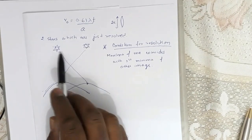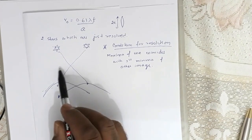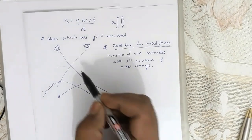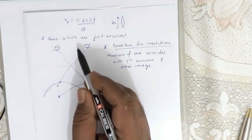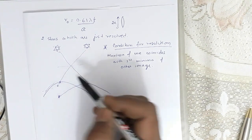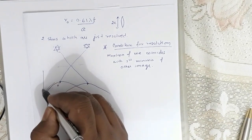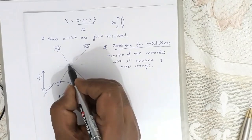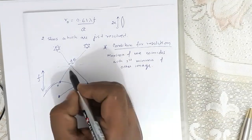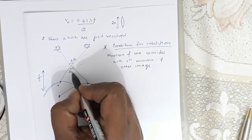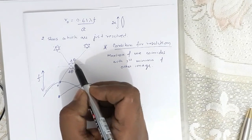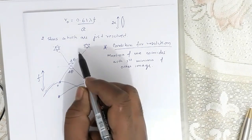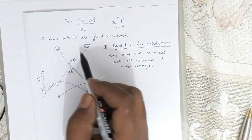Now if these two stars are just resolved by the convex lens placed at this point, the stars are at infinity, so the lens forms the image at its focus f. Suppose delta theta is the angle of resolution — this is the minimum angle, meaning if the angle is smaller than delta theta, you will not be able to differentiate the two stars and will observe them as a single star.